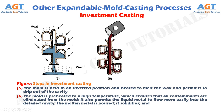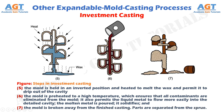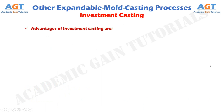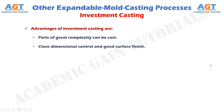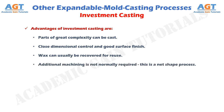The molten metal is poured, it solidifies, and Figure 7 shows the seventh and final step in the investment casting process, where the mold is broken away from the finished casting. Parts are separated from the sprue. Advantages of investment casting are: parts of great complexity can be cast; close dimensional control and good surface finish; wax can usually be recovered for reuse; and additional machining is not normally required — this is a net shape process.